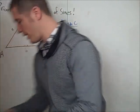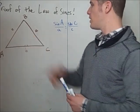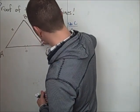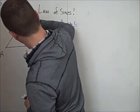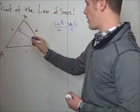What happens if we drop a perpendicular from vertex C to side c? So drop a perpendicular here, like this. And call this length H2.